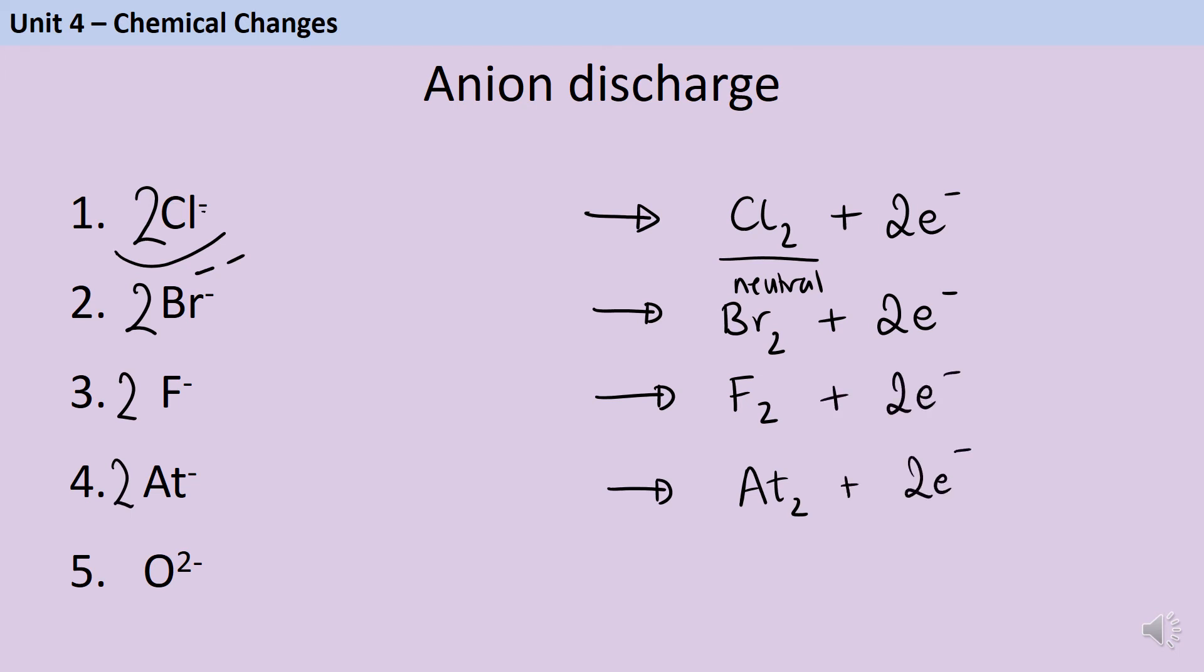Now, the last one is a little bit tricky. So oxygen also forms diatomic molecules, and therefore we also need two over here. However, when I start adding up all of these negative charges, each ion has two negative charges, and there are two of them. So that means that in total, I have four negative charges. So over here, I'm going to need four negative electrons. How did you get on?